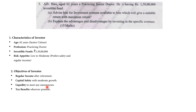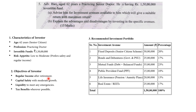His objectives are: regular income after retirement, capital safety with moderate growth, liquidity to meet any emergency, and tax benefit wherever possible. Based on his criteria, we can put funds into different avenues. Since he wants stable returns, try putting no equity or less equity. The ₹1.5 crore breakup can be: Fixed Deposit ₹30 lakhs, Bonds and Debentures ₹25 lakhs, Mutual Fund ₹35 lakhs, Provident Fund ₹15 lakhs, Life Insurance ₹20 lakhs, and Real Estate ₹25 lakhs — totalling 100% and ₹1.5 crores.